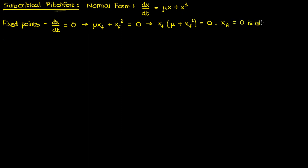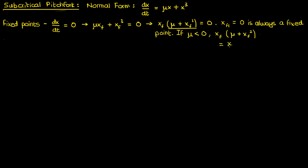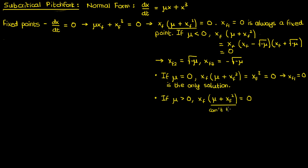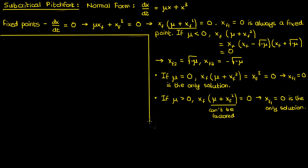From this factorization, xf₁ = 0 is always a fixed point, but depending on μ we could have others. If μ is negative we can factorize the parenthetical term further, giving two more fixed points at √(−μ) and −√(−μ). If μ = 0 we just have xf³ = 0, with only one solution at xf = 0. If μ is positive we can't factorize using real numbers, so 0 is once again the only solution. What's happening now is essentially the reverse of the supercritical case: as μ goes from negative to positive, we go from three fixed points to one.